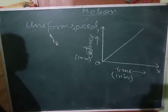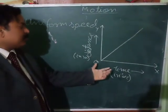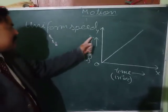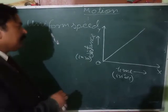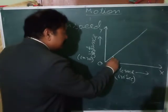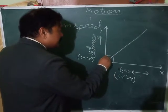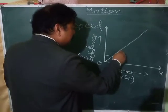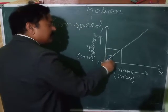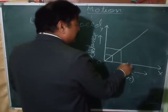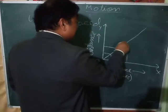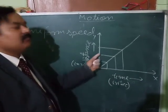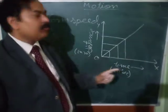For uniform speed, if we draw a distance-time graph with time along the x-axis and distance along the y-axis, a body covering equal distance in equal time intervals will always produce a straight line graph. Each equal time interval corresponds to an equal increase in distance.